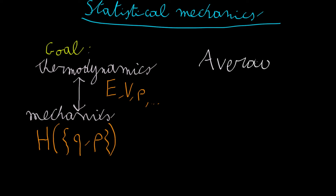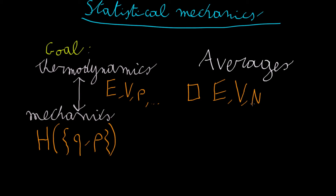These averages will be defined differently depending on how we choose to set our system. If our gas is completely isolated in an insulated box, then the system's total energy will be conserved, together with its volume and its number of particles. In this case, we will call this average microcanonical. All its other properties, like the pressure, the temperature, etc., will then be determined by these three pieces of information about the state of the gas.